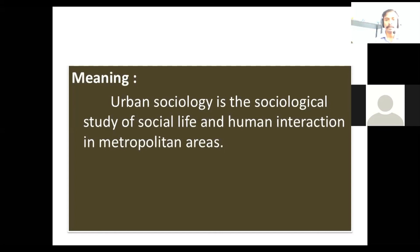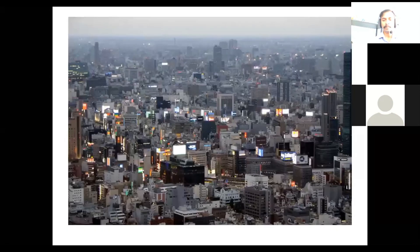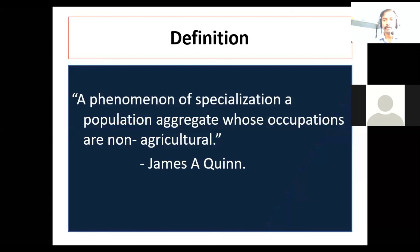Just compare urban and rural. In rural, we can see greenery, but in mega cities there is no green — only buildings. Urban is defined as a phenomenon of specialization, a population aggregate whose occupations are non-agricultural. So the keyword to underline is occupation non-agricultural.